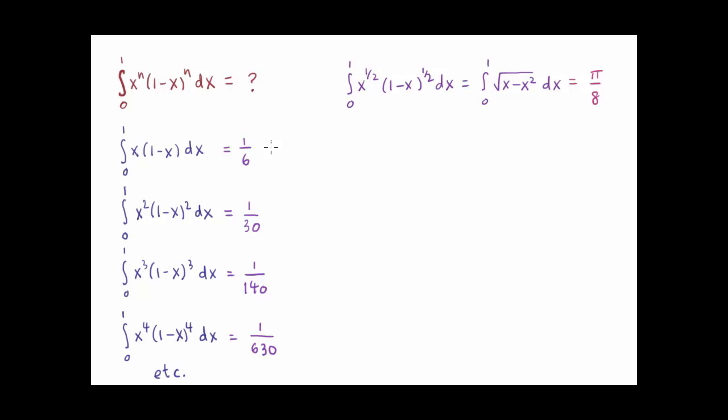Here's the pattern. We can write one over six as one over two times three, but we can write one over thirty as one times two over three times four times five. And we can write one over one-forty as one times two times three over four times five times six times seven, and this pattern continues. One over six thirty is equal to the product of one through four over the product of five through nine.